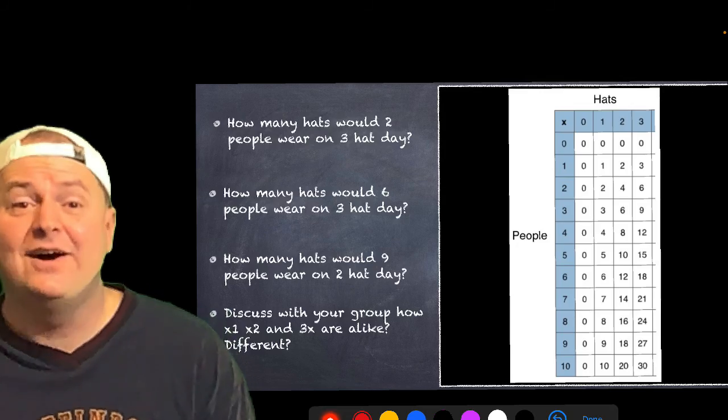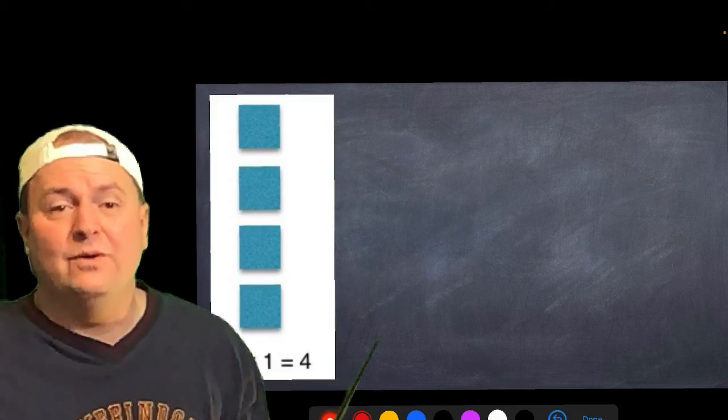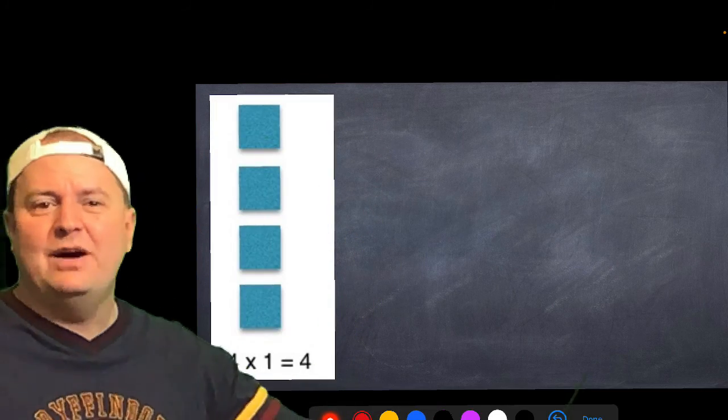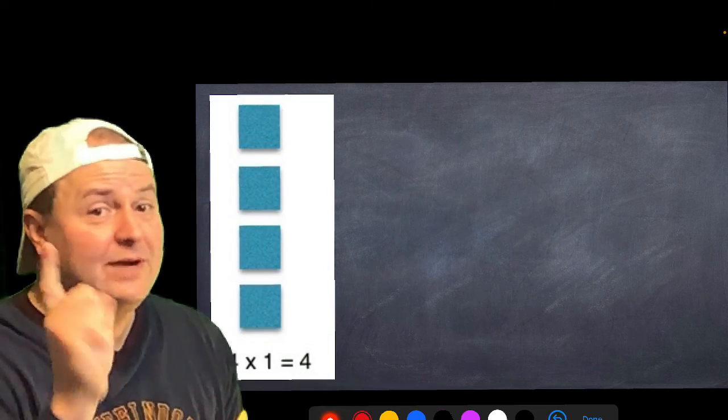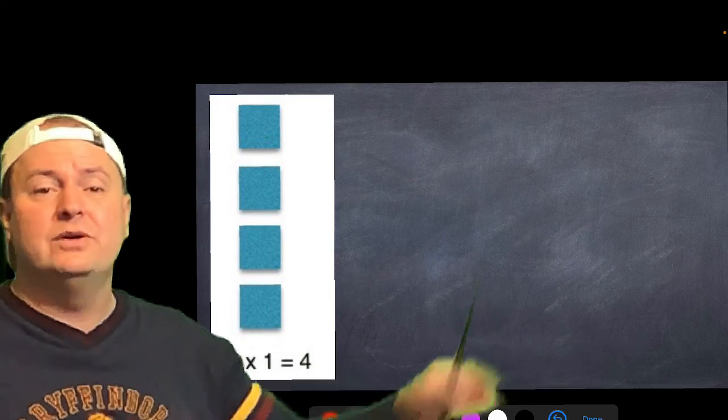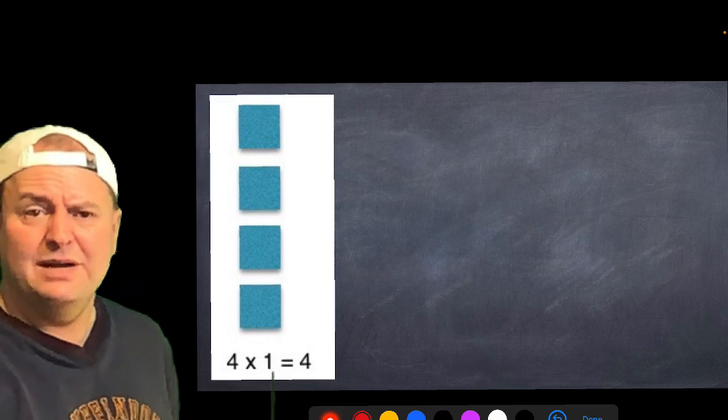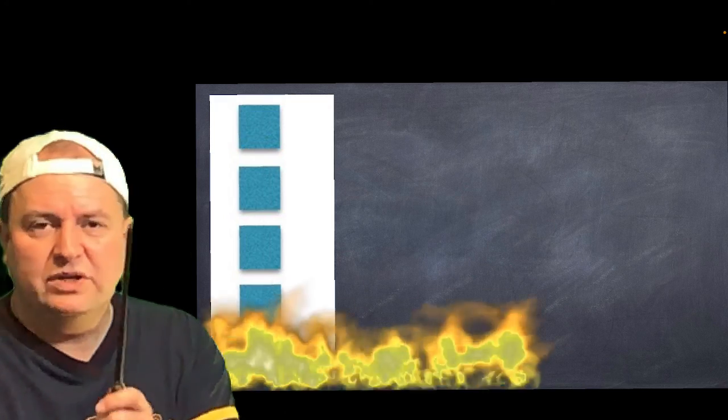All right, guys, we're back. So, now, you discussed how the one, twos, and threes were alike. So, if we had here, we've got what? We've got four columns in one row? No. You guys are smarter than Miss Darling. You know that that is one column. So, four rows and one column. Four times one equals four. Now, what if we were to add that? El Fuego.